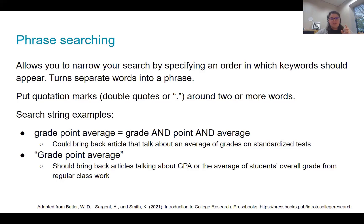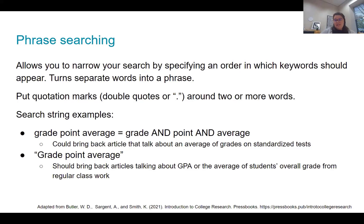Phrase searching is also great for searching a specific title. If I wanted the book 'To Kill a Mockingbird,' putting quotation marks around it tells the database I want that specific phrase. Without quotation marks, 'grade point average' makes the database look for 'grade' AND 'point' AND 'average' separately — which could return articles about an average of grades on standardized tests. With quotation marks around 'grade point average,' it should bring back articles specifically about GPA — the overall grade a student earns in regular coursework.